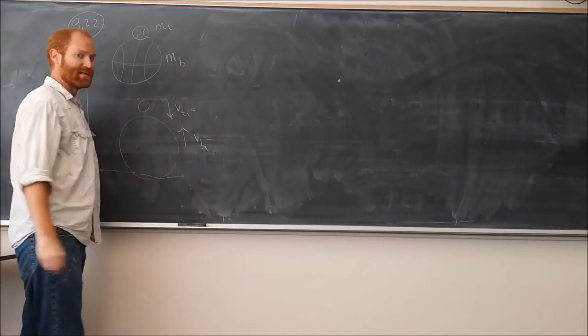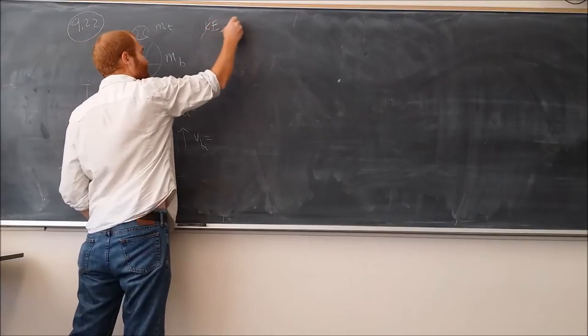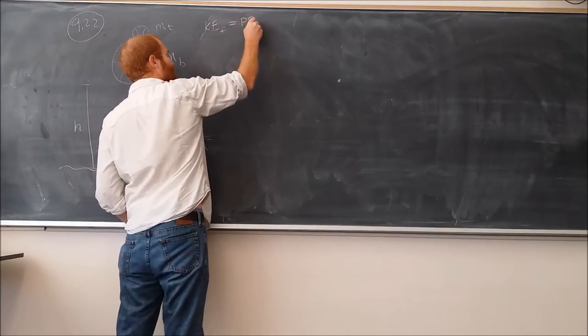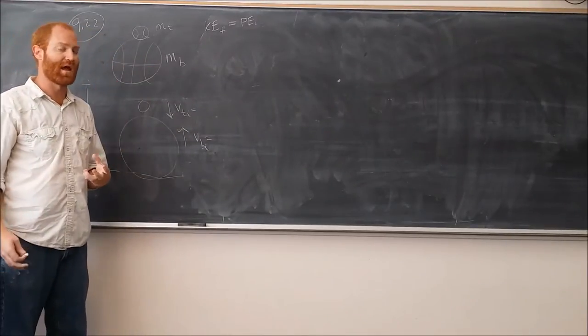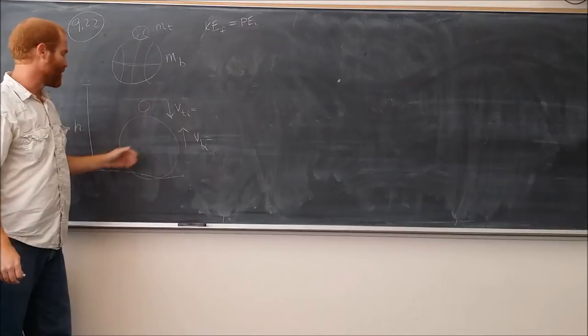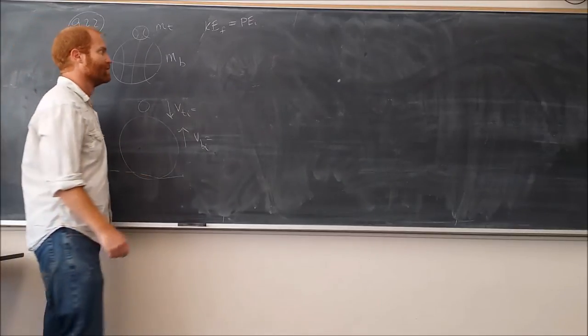So to figure out what velocities these objects have here, we need to use energy conservation. Say that the kinetic energy they have at the bottom is equal to the potential energy that they have right here at the top, because if they're dropped from rest, the only energy they're going to have is potential energy. Once they get to the bottom, if we call the ground zero for potential energy, then all they're going to have is kinetic energy.